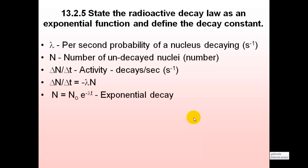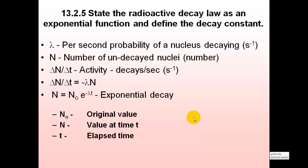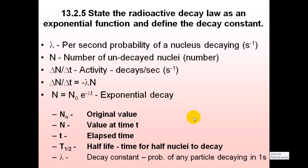This is the exponential decay equation. N naught is the original number of nuclei. N is the number of nuclei left at time T. T is time. T half is the half-life — this is the time taken for half the nuclei to decay. And Lambda is the decay constant, the probability of any nucleus decaying in a second.